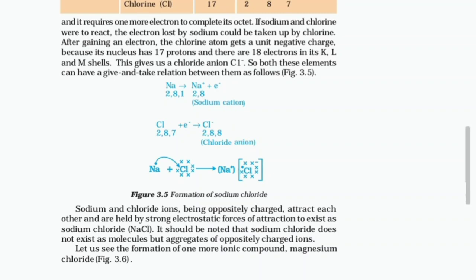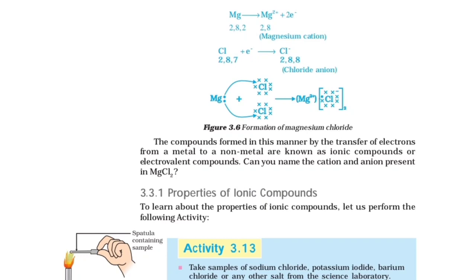Sodium and chloride ions, being oppositely charged, attract each other and are held by strong electrostatic forces of attraction to exist as sodium chloride (NaCl). It should be noted that sodium chloride does not exist as molecules but as aggregates of oppositely charged ions. Let us see the formation of another ionic compound — magnesium chloride (MgCl₂): magnesium loses 2 electrons to form Mg²⁺, and two chlorine atoms each gain one electron to form Cl⁻. The compounds formed by the transfer of electrons from a metal to a non-metal are known as ionic compounds or electrovalent compounds.